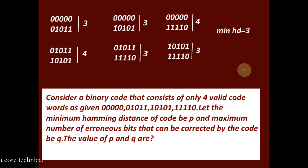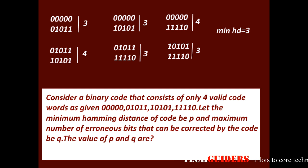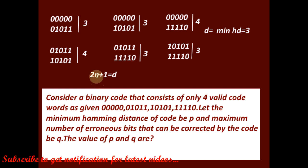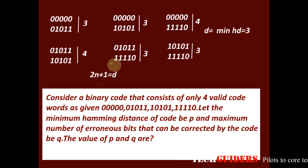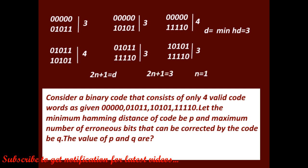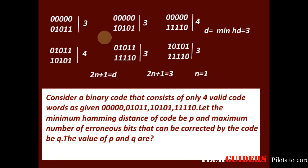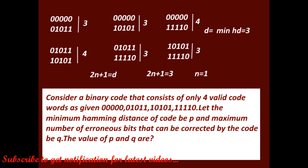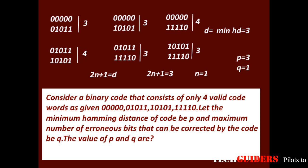So we can see the minimum Hamming distance is 3. With minimum Hamming distance 3, the maximum number of bits that can be corrected is determined by the relation 2n + 1 = d, where d is the minimum Hamming distance and n is the maximum number of bits that can be corrected. With d = 3, we get n = 1. So the value of P is 3 and the value of Q is 1.